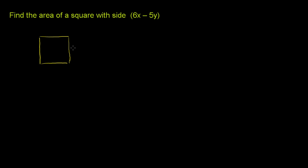And they're telling us that the length for each of the sides, which is the same for all of them, is 6x minus 5y. So the height would be 6x minus 5y, and so would the width, 6x minus 5y.